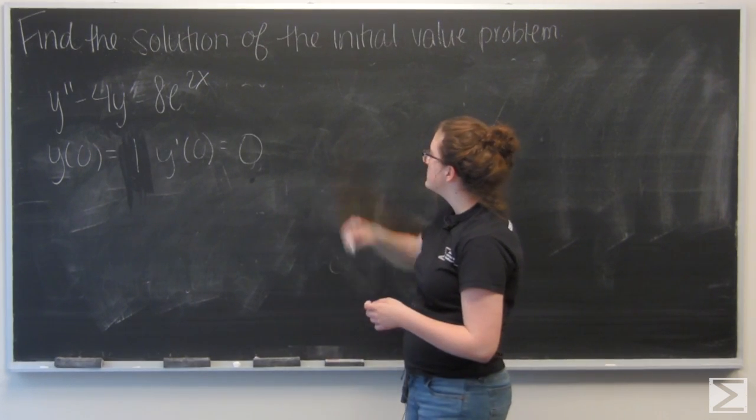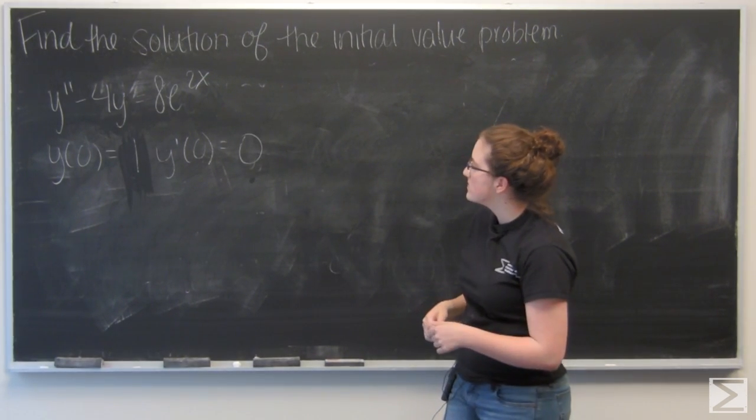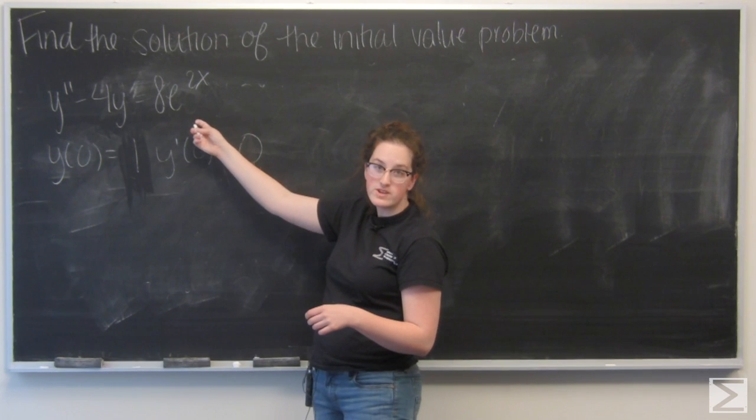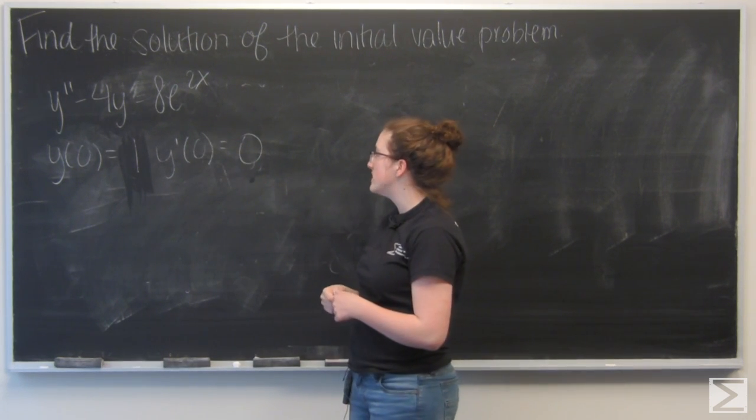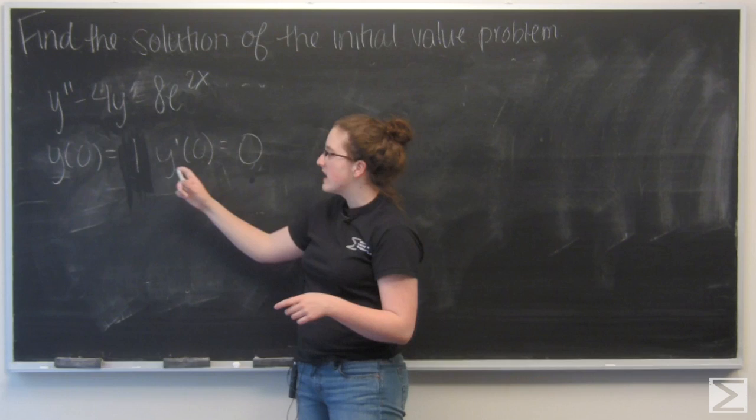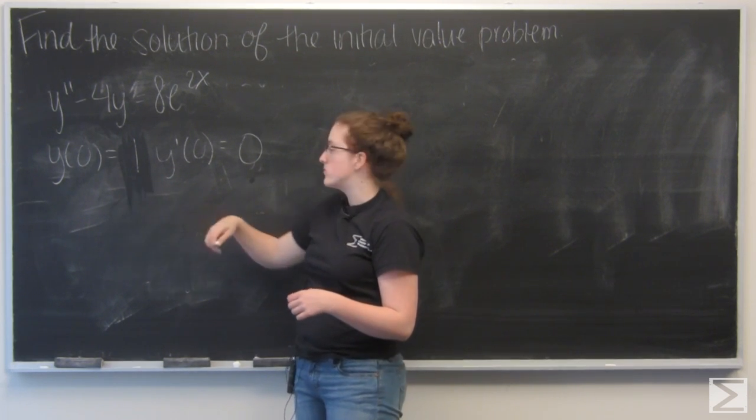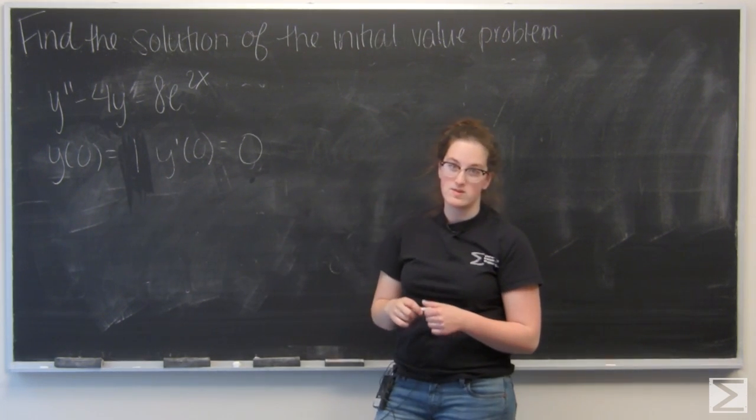This question asks us to find the solution of the initial value problem. I'm given a second order equation, y double prime minus 4y equals 8e to the 2x, and the initial conditions y of 0 equals 1 and y prime of 0 equals 0.